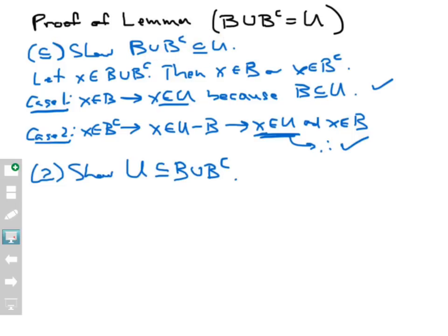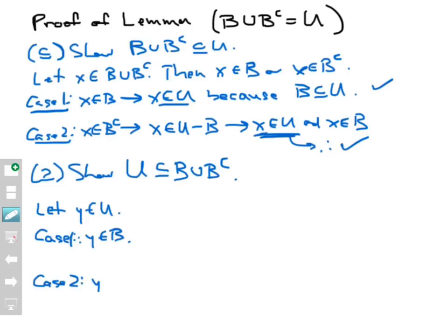Now let's move on to the other direction of this proof: showing that U is a subset of B union B complement. Let's let y be anything in the universal set. I'm going to set up two cases again. Case one: y is in B. Case two: y does not belong to B. Any element I pick in the universal set will fall into one of those two categories — either y is in B or it isn't. There's no middle ground.